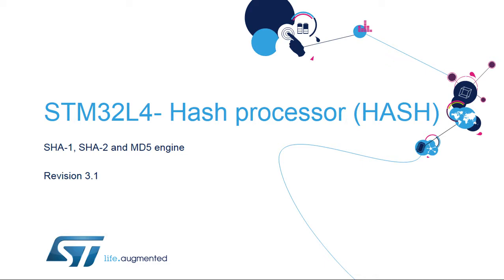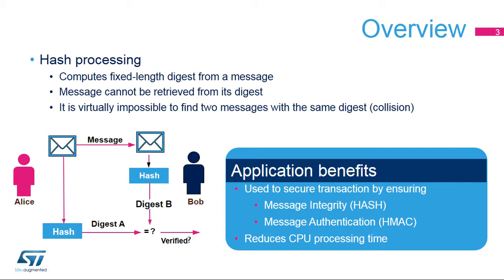Welcome to this presentation of the Hash Processor. The Hash Peripheral is in charge of efficient computing of the Message Digest. A digest is a fixed-length value computed from an input message. A digest is unique — it is virtually impossible to find two messages with the same digest.